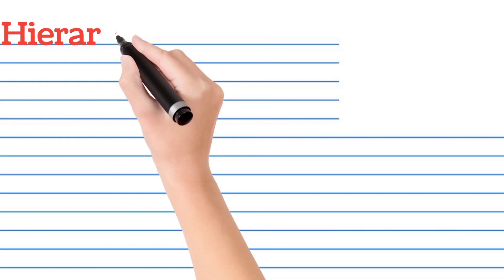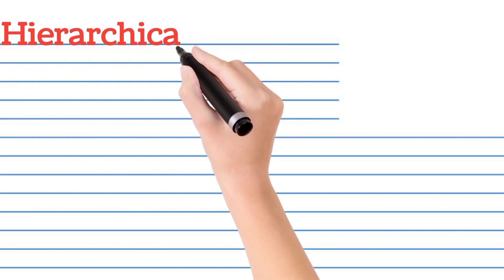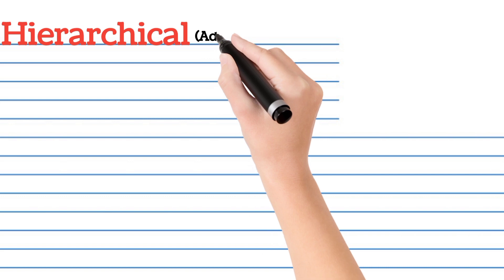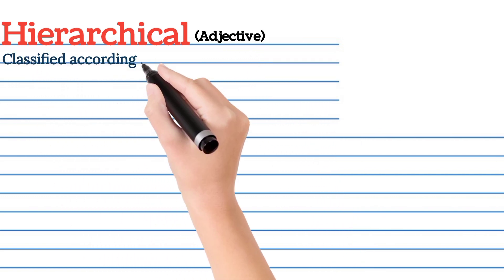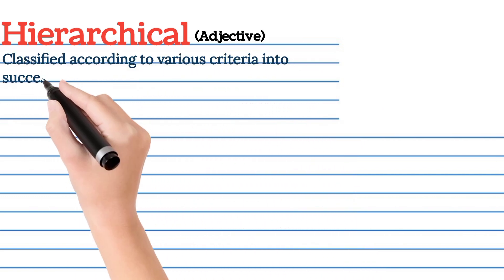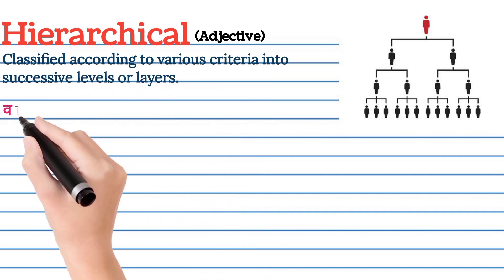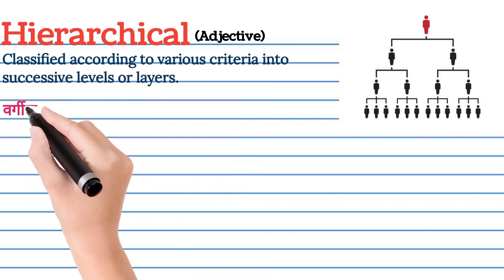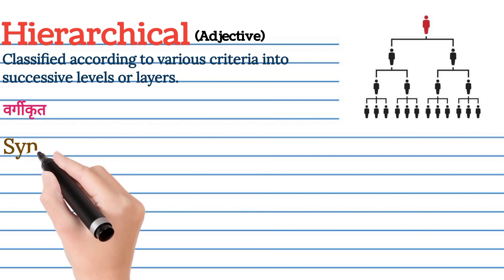Welcome to Curious Spoken English. Today's word is Hierarchical. Hierarchical ka arth English mein aur Hindi mein kya hota hai is video mein samaj lete hai. Hierarchical ka matlab English mein classified according to various criteria into successive levels or layers. Hierarchical ka arth Hindi mein wargi krit.